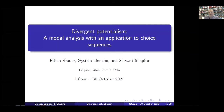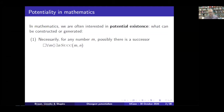We're converging on this discussion of divergent potentialism as Marcus observed. So let me begin with a little bit of stage setting. In mathematics, you're often interested in potential existence — what can be constructed or generated?